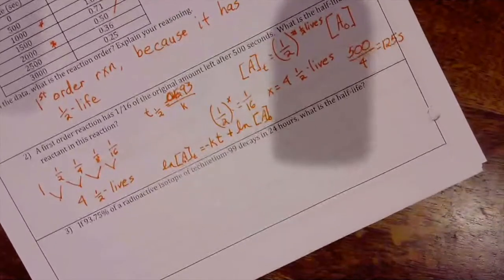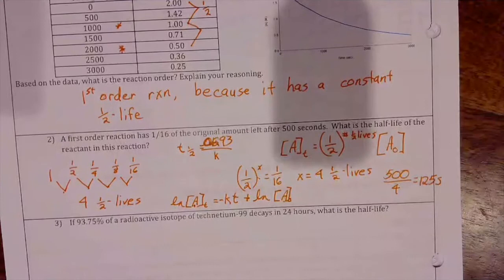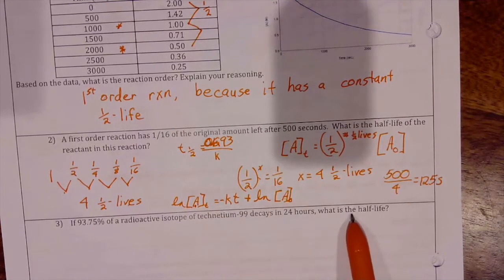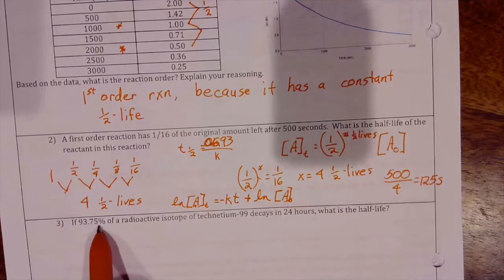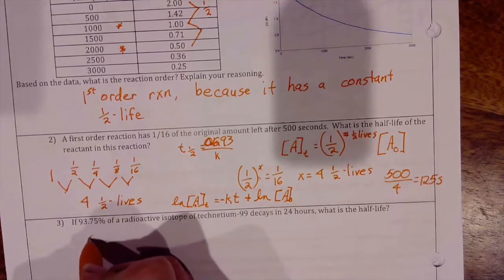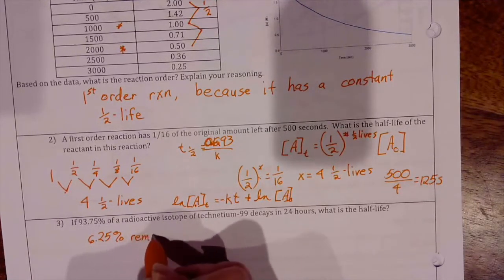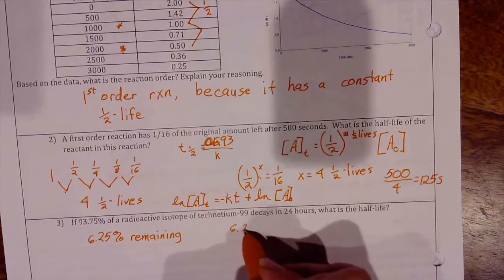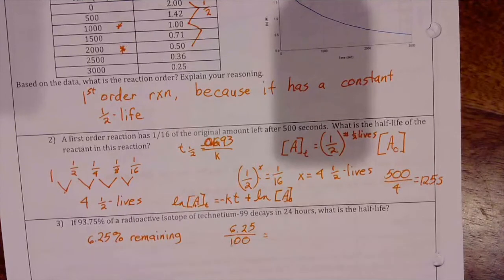By much the same process, we can see that if 93.75% of a radioactive isotope of technetium-99 decays in 24 hours, what is the half-life? If 93.75% decays, that means I have 6.25% remaining. And 6.25% is 6.25 out of 100, which is the same thing as 1/16th.